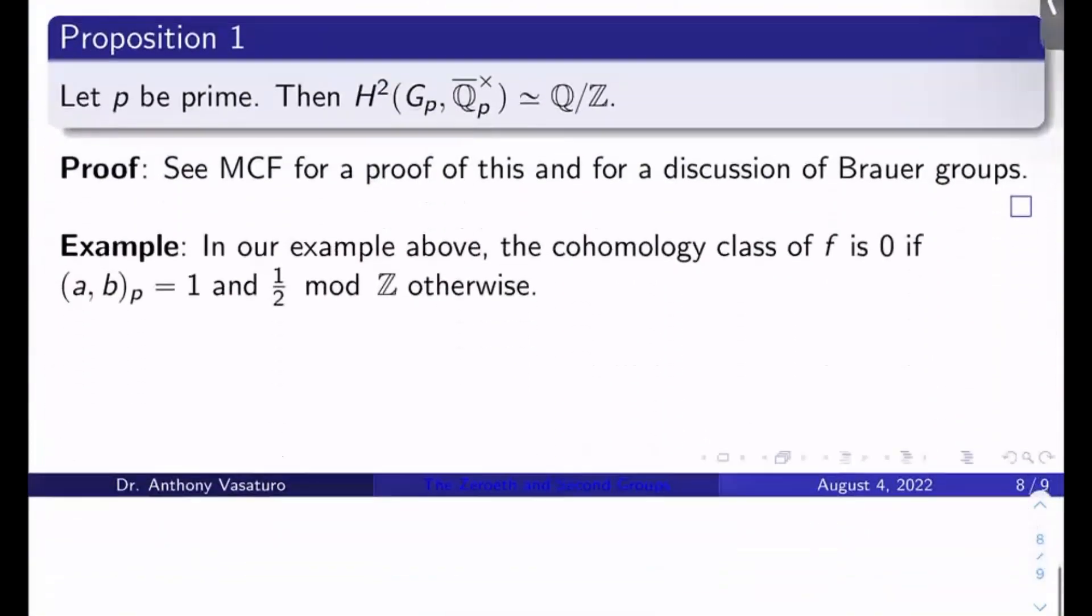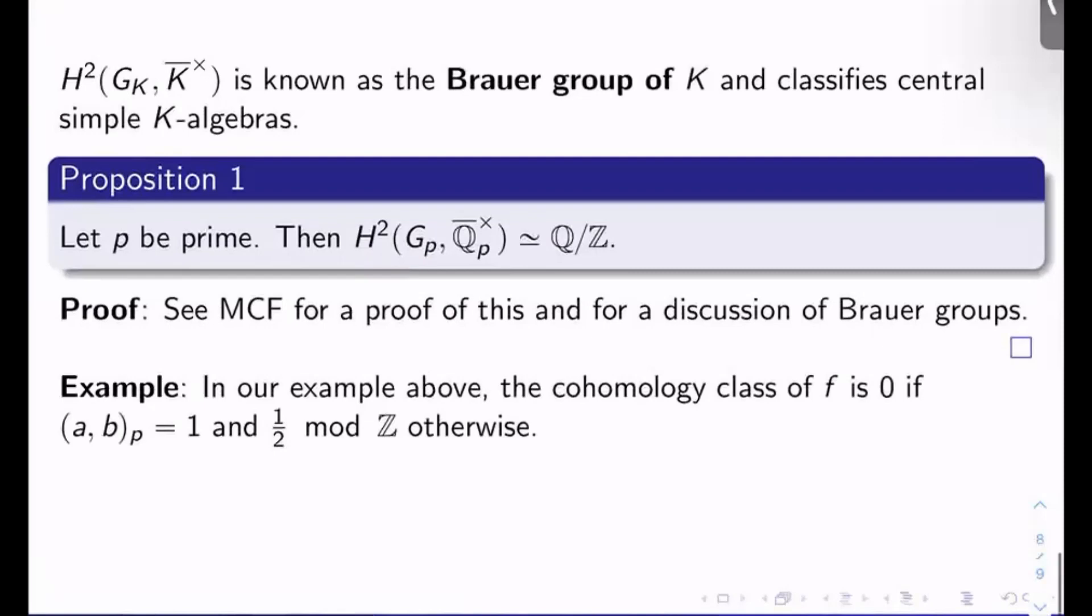We'll finish with two examples and a proposition. H²(G_K, K̄*) is known as the Brauer group of K and classifies central simple K-algebras. I won't define any of that terminology, it's a bit tangential for our purposes, but you can go check all that out. This is true for any field K. Proposition 1: Let p be prime. Then H²(G_p, Q̄_p*) is isomorphic to Q/Z. This is a very important result in class field theory and Galois cohomology. It's basically a special case where we can actually calculate the Brauer group, although we can calculate the Brauer group in a lot of different cases. See Milne's class field theory notes for a proof and for a large discussion of Brauer groups and specific computations of other Brauer groups.